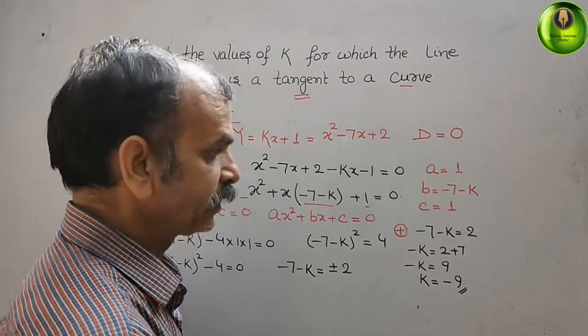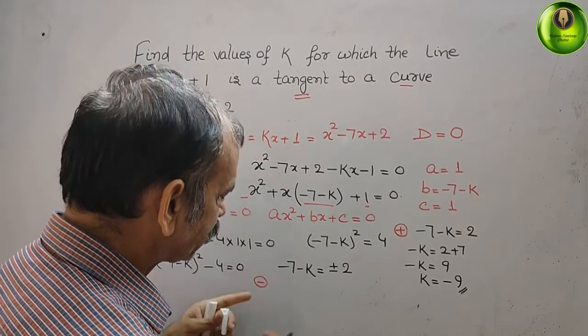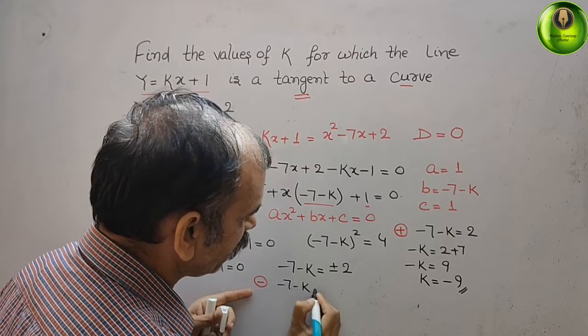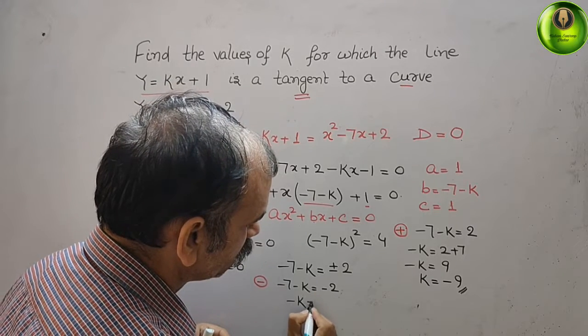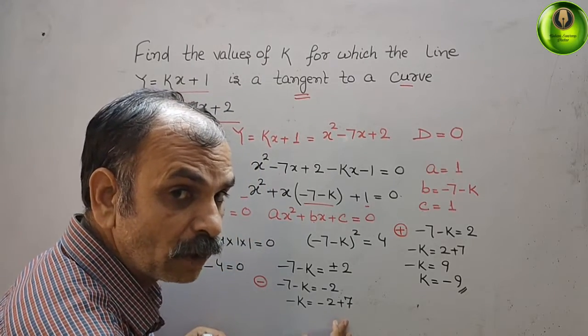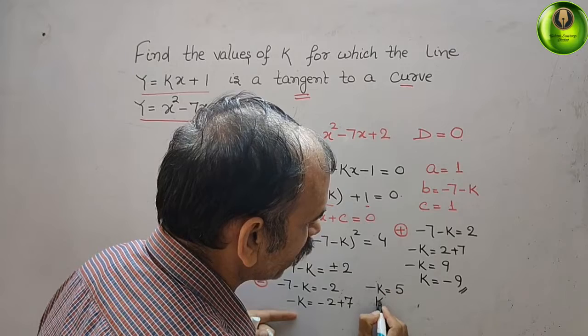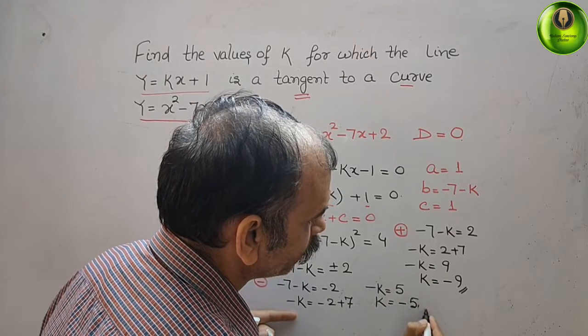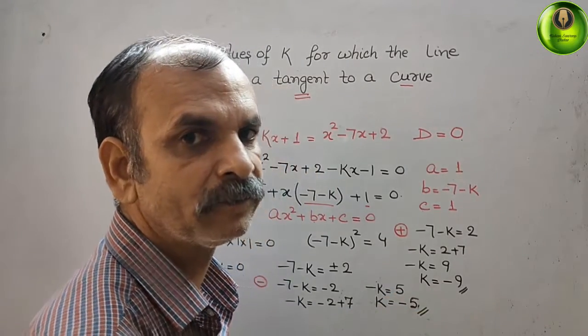Taking the negative case: −7 − k = −2, so −k = −2 + 7 = 5, therefore k = −5. The two values of k are −5 and −9.